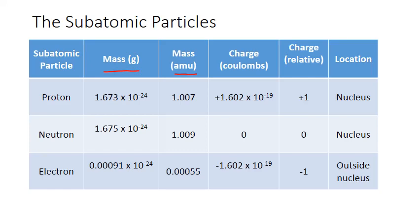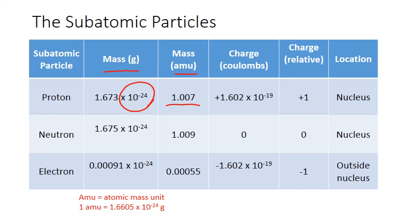Grams is the unit we're most familiar with. You can see from these values that the particles are incredibly tiny — on the order of 10 to the negative 24 grams. These aren't easy numbers to deal with, so we usually convert them into units of AMU, which stands for atomic mass unit. One AMU is defined to be exactly 1.6605 times 10 to the negative 24 grams. When we convert, the proton is approximately 1 AMU, the neutron is also a little bit larger than 1 AMU, and the electron is much smaller — a fraction of 1 AMU.